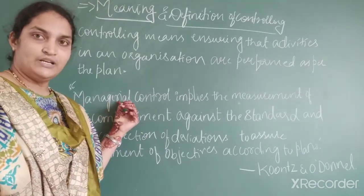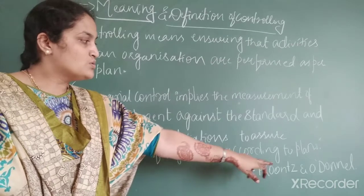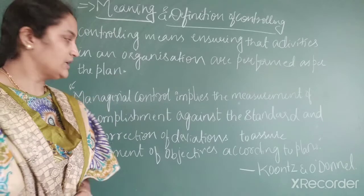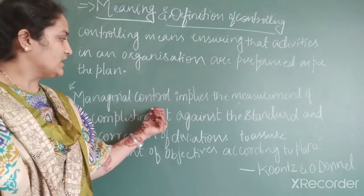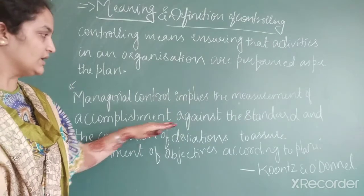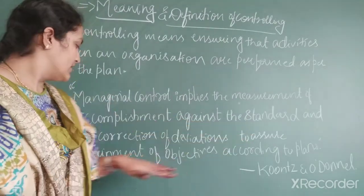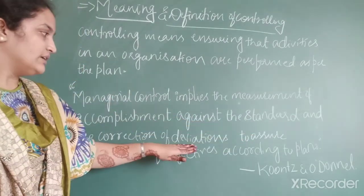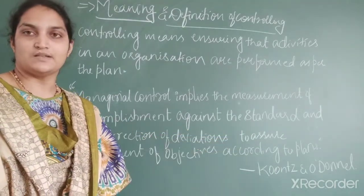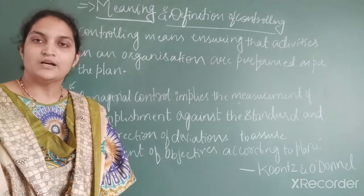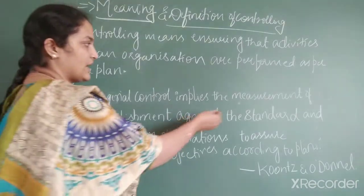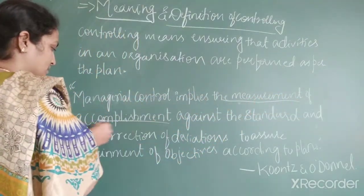Coming to the definition given by Koontz and O'Donnell, they defined controlling as: managerial control implies the measurement of accomplishment against the standard and the correction of deviation to assure attainment of objectives according to the plans. According to them, managerial control implies the measurement of accomplishment.